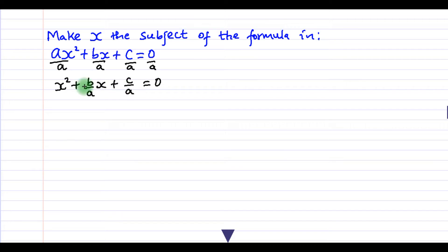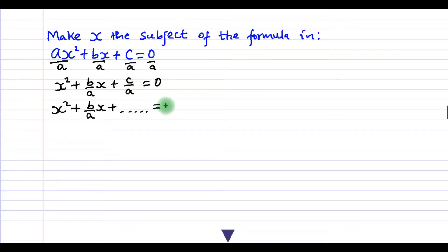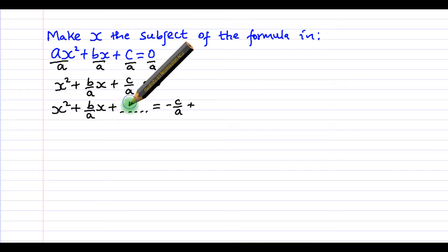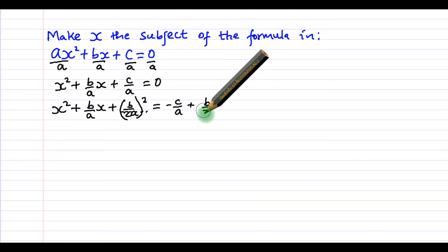We rewrite it as x squared plus b over a times x, then ask what must be added to make it a perfect square. We take c over a to the right hand side to become minus c over a. Whatever must be added to the left to make it a perfect square must also be added to the right hand side. The value to add is half the coefficient of x, which is b over 2a, and we square it to get b squared over 4a squared.